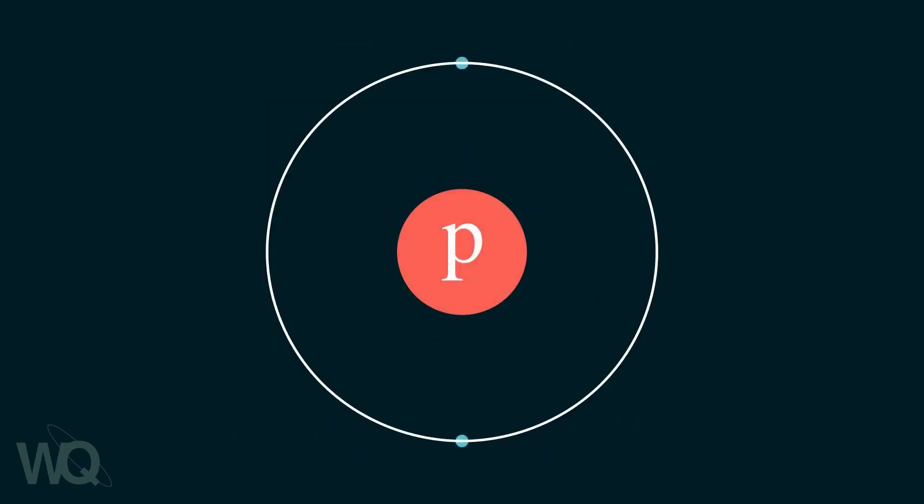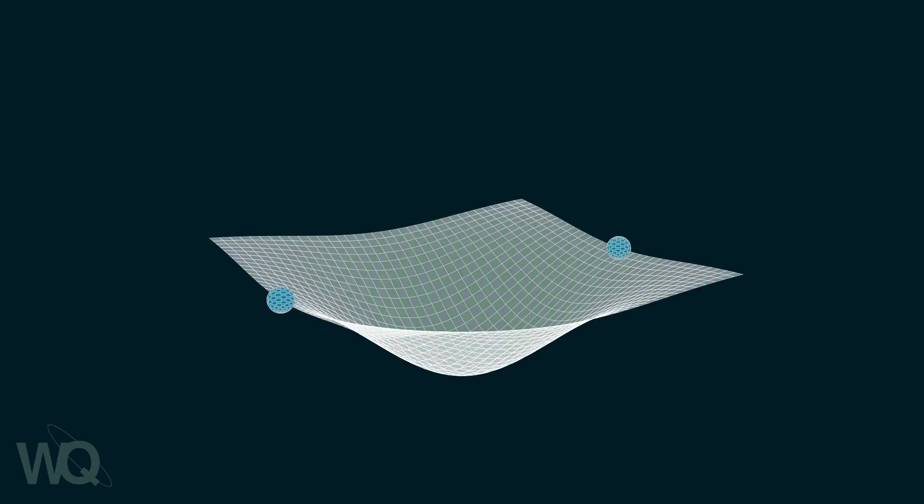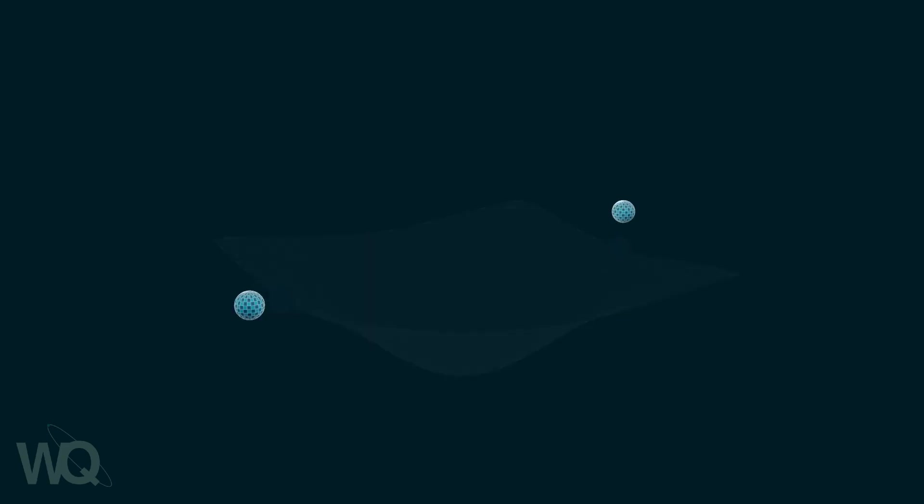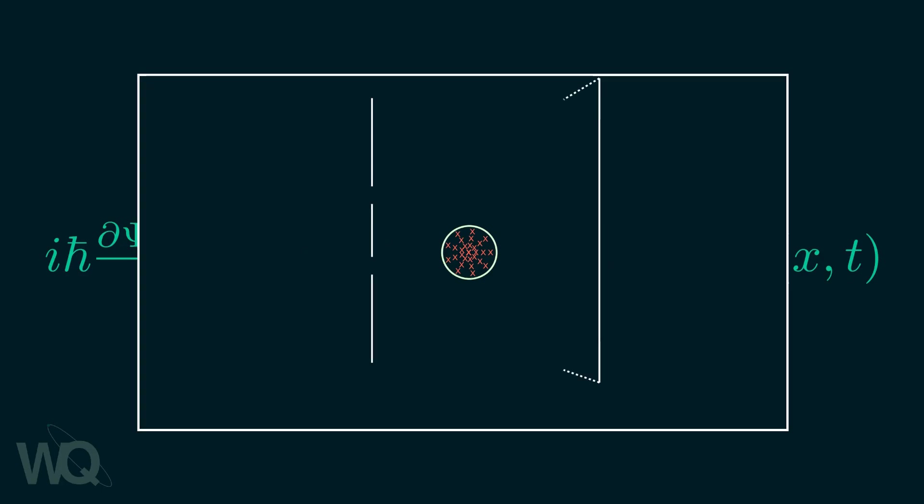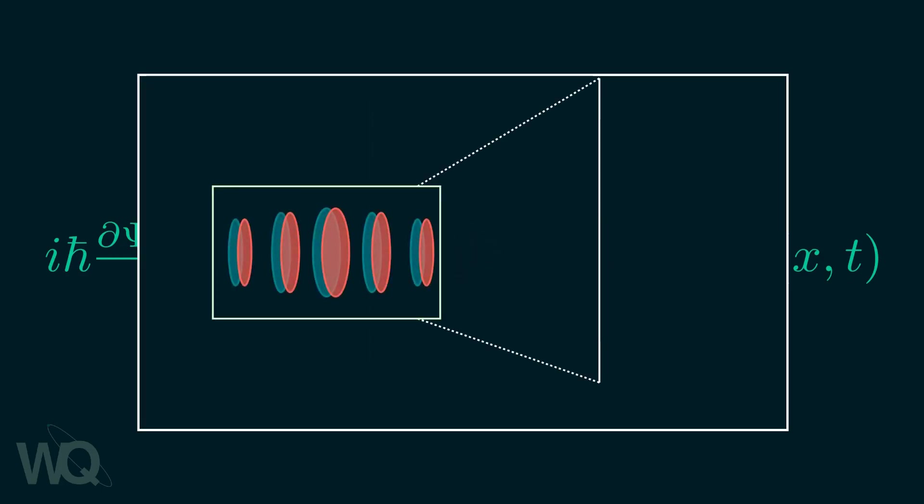Moreover, when you make quantum theory consistent with relativity, you get a bunch of exotic phenomena like particle creation, annihilation, and antiparticles, which cannot be explained by the simple Schrödinger equation. However, it can still explain one of the coolest experiments to be ever performed.